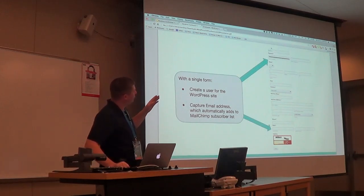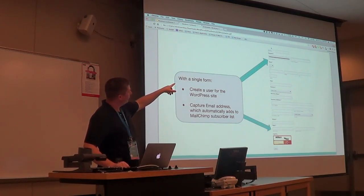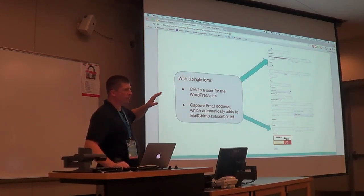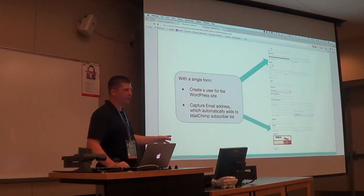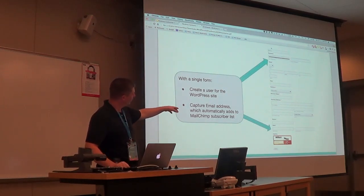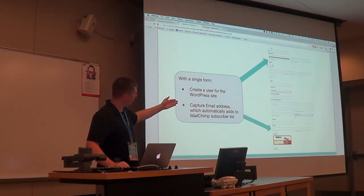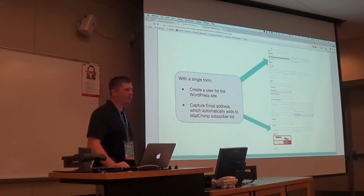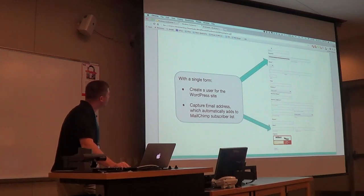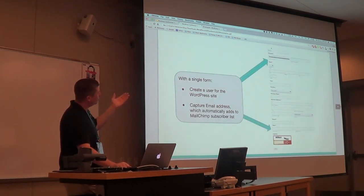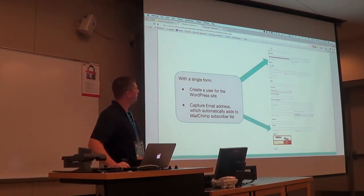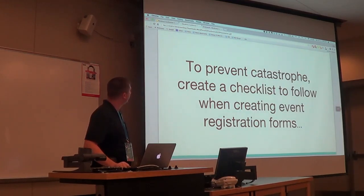So with a single form — like the sign-up for your event — with Gravity Forms you can integrate the username and password. You can set it up so they actually become a user on your WordPress site, and that can be automated. Then if you have your email integrated with MailChimp, in one shot you can get all their information, make them a user of your website, and automatically add their email to your MailChimp mailing list. Otherwise you'd have to set up a user account individually, gather the information, and then use an individual sign-up widget.